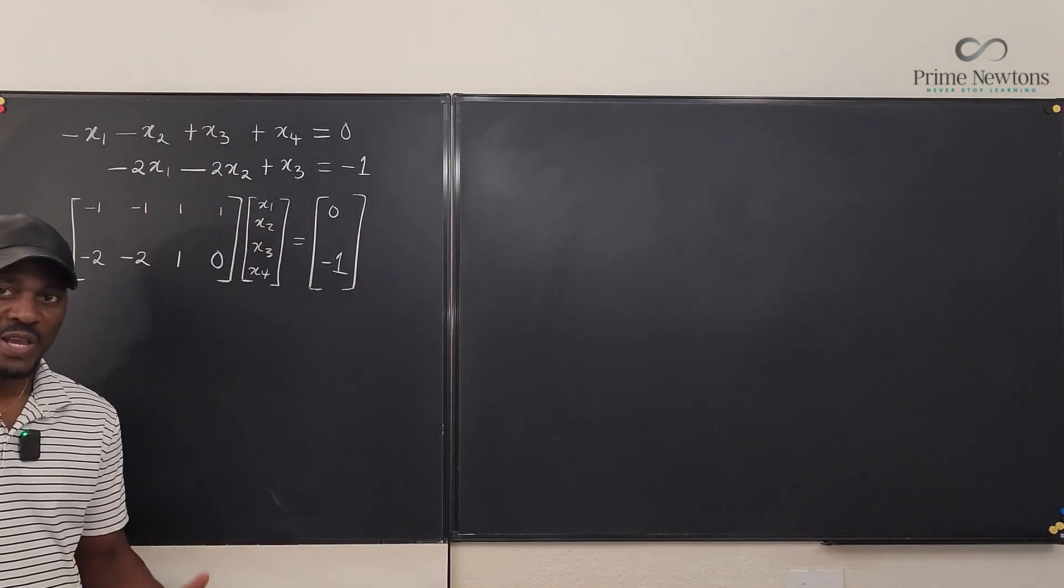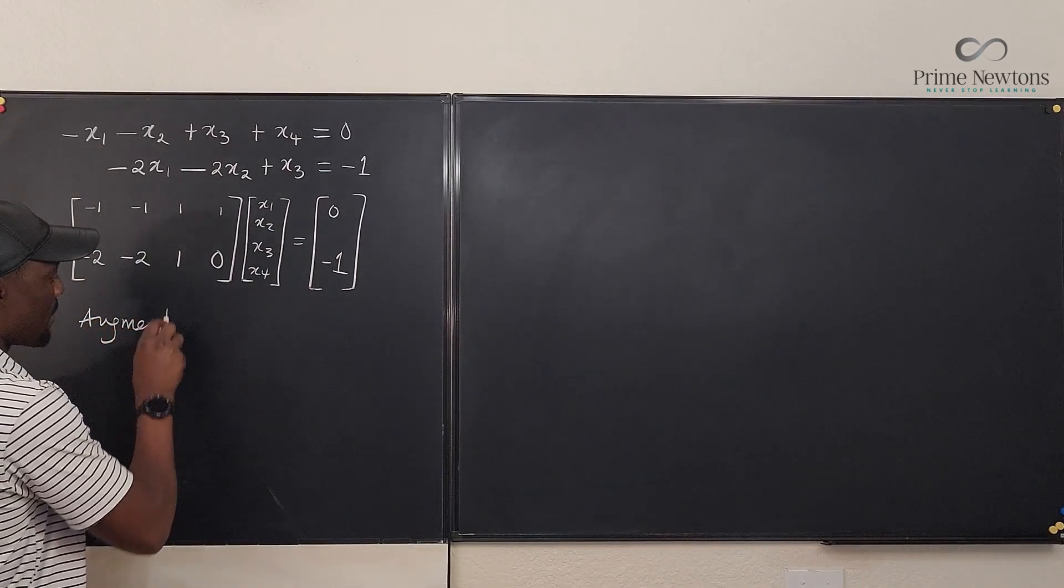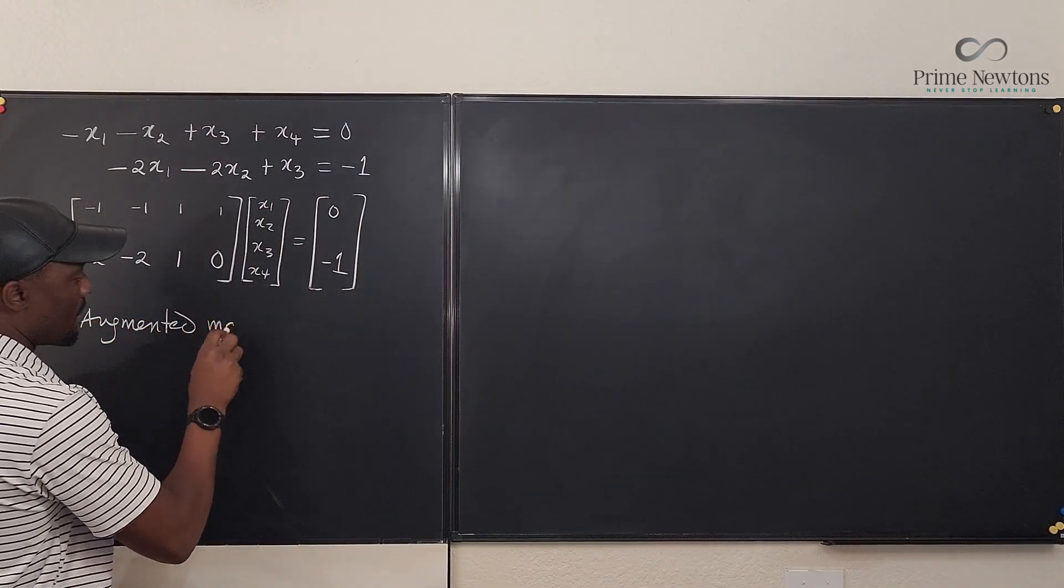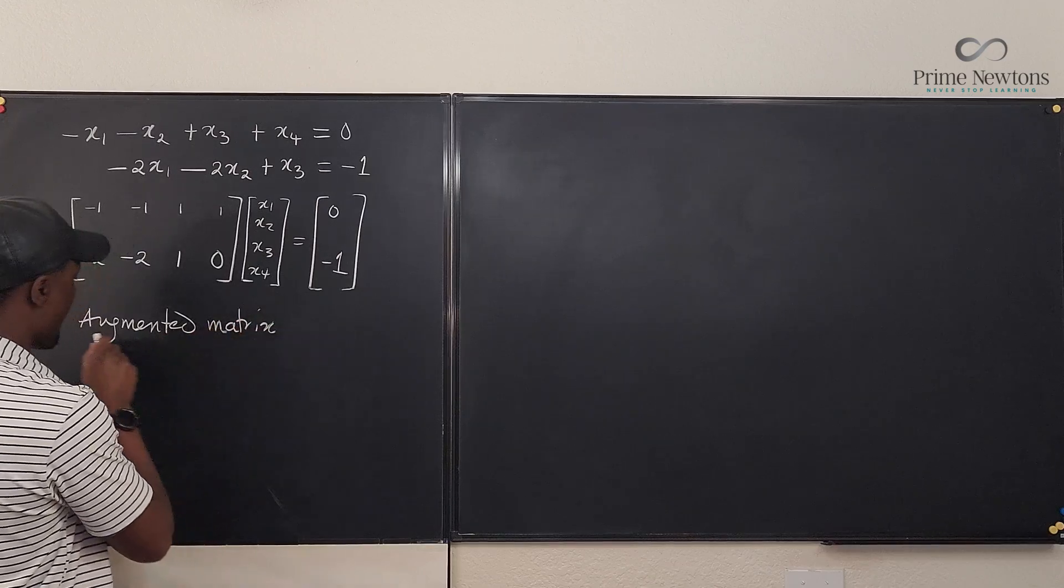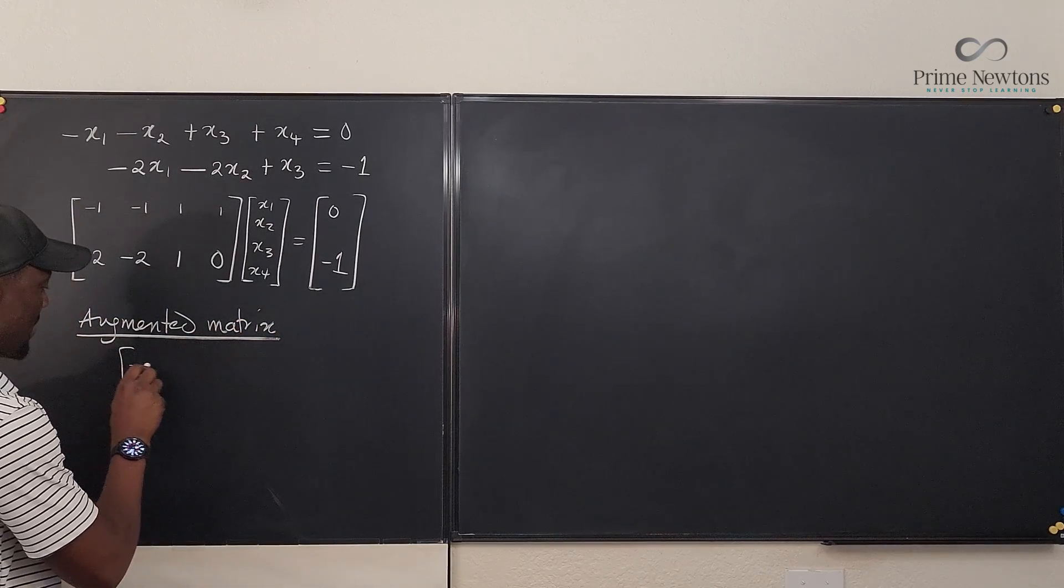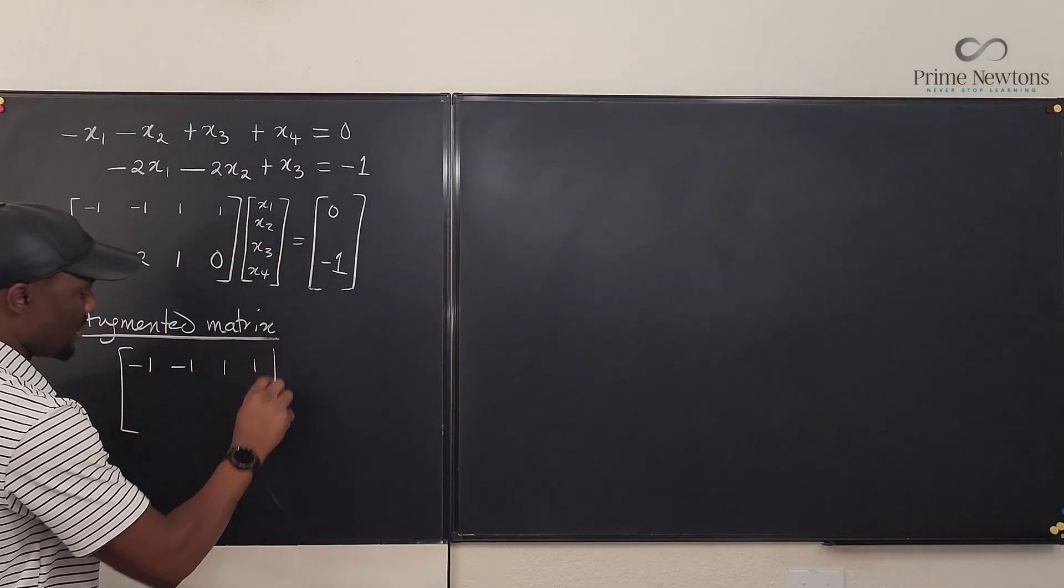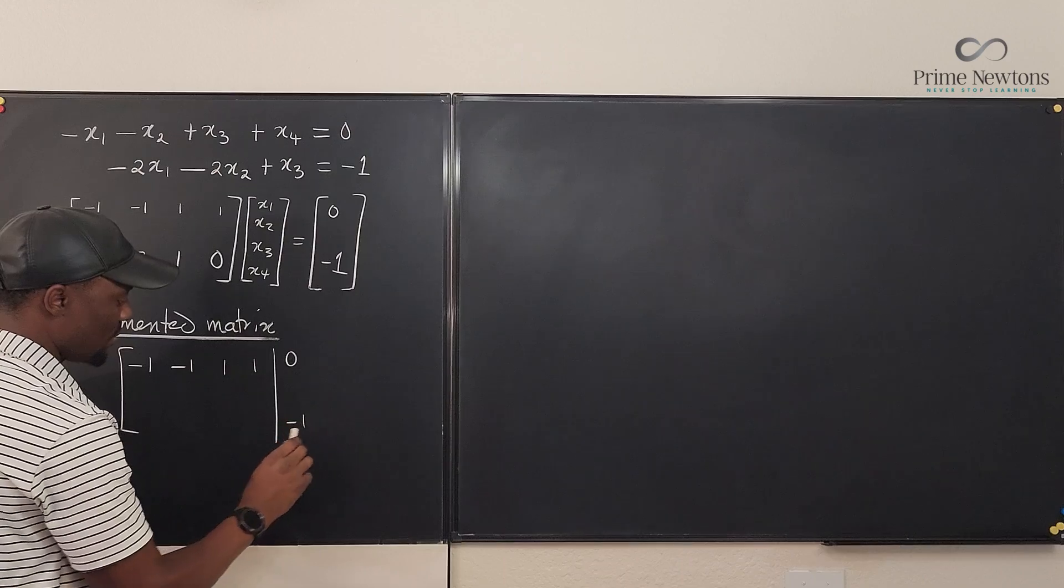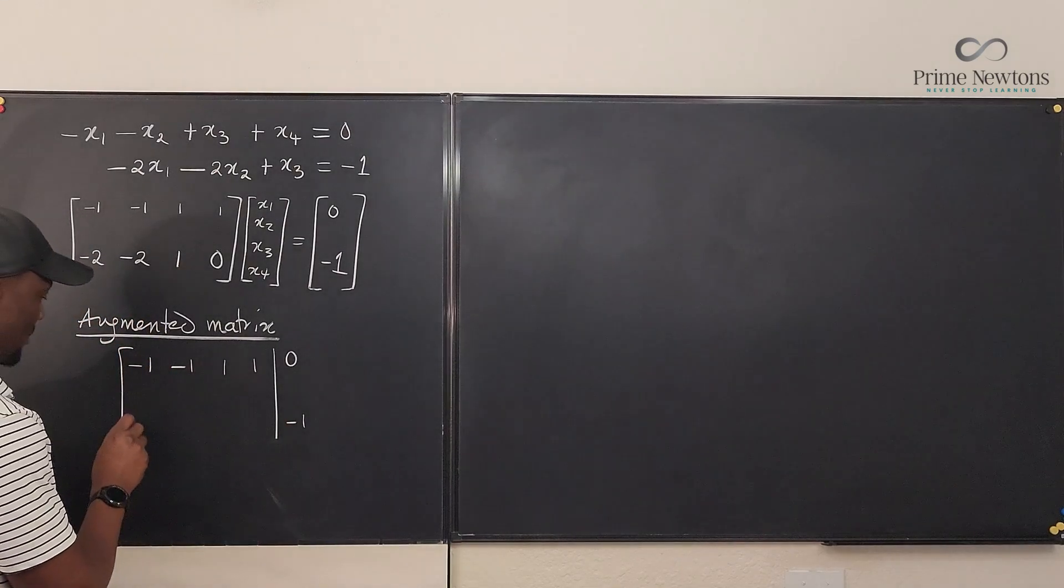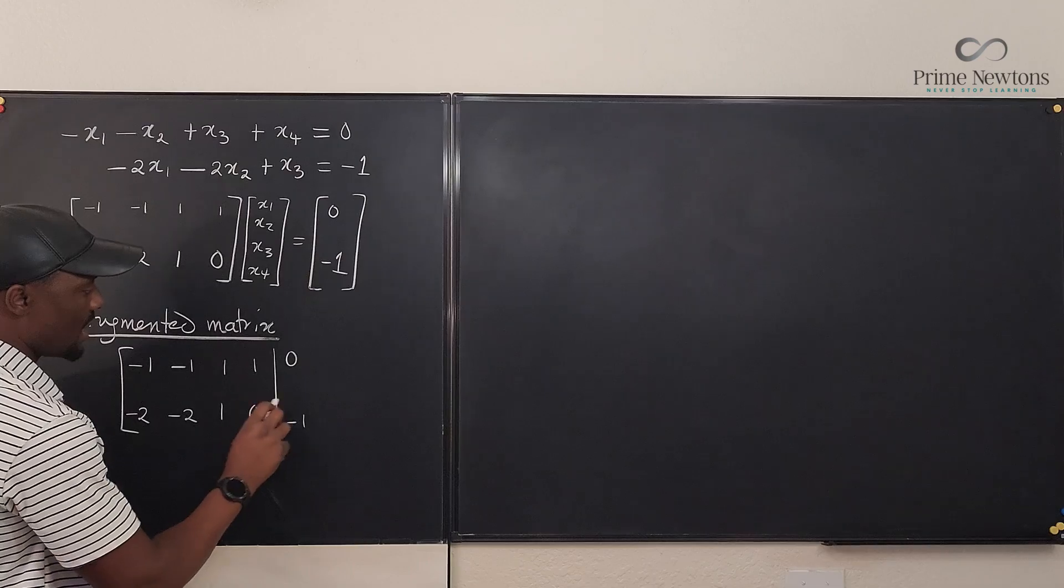So what we're going to do is generate the augmented matrix. So the augmented matrix is going to look like this. Minus one, minus one, one, one. And then we're going to have zero and minus one. And for the second one, it's going to be minus two, minus two, one, and zero.